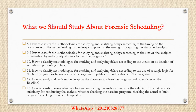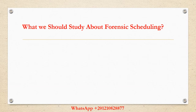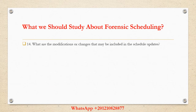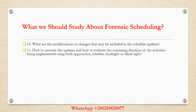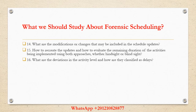15. Checking the baseline program, checking the actual as-built program, checking the schedule updates. 14. What are the modifications or changes that may be included in the schedule updates? 15. How to recreate the updates and how to evaluate the remaining duration of the activities being implemented. 16. What are the deviations at the activity level and how are they classified as delays? 17. How to create a schedule as it was actually built and determine the critical path and the controlling activities?